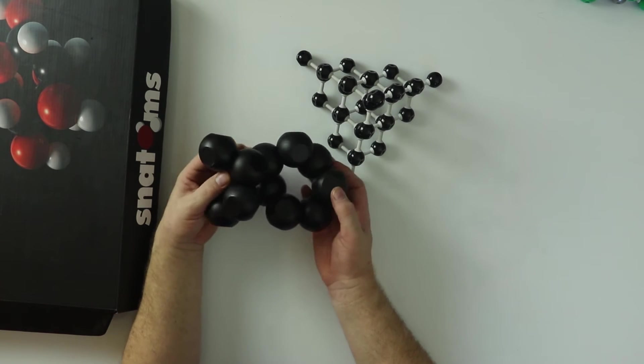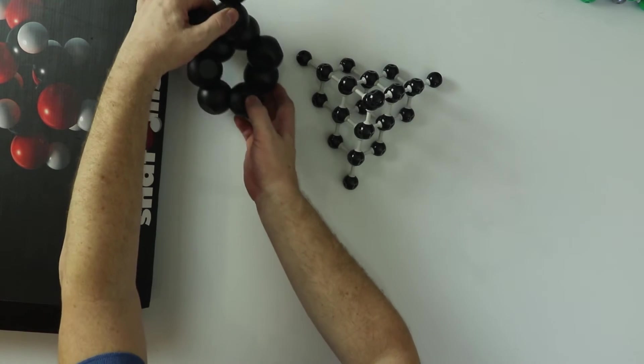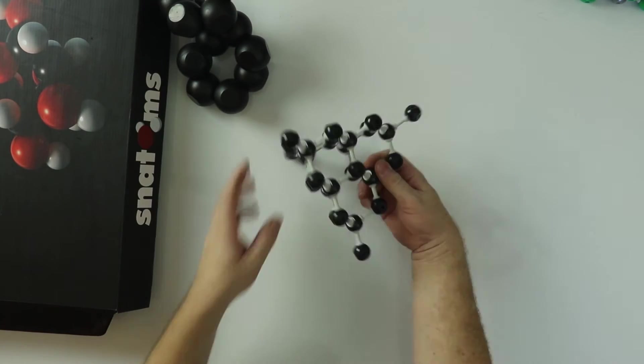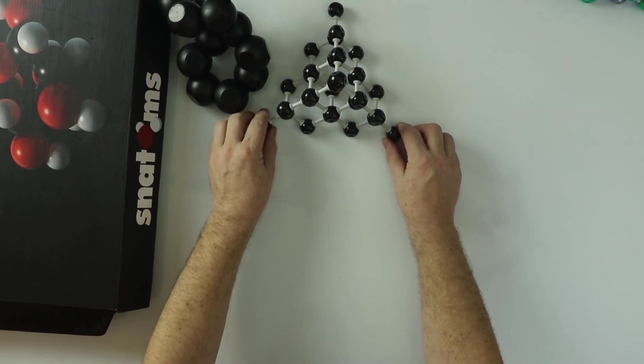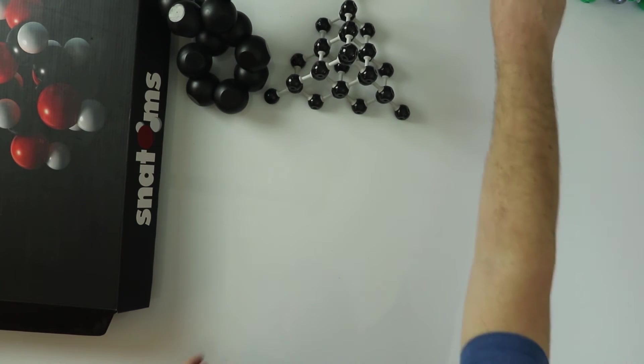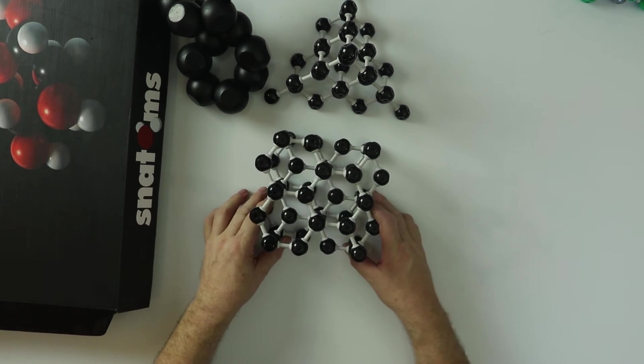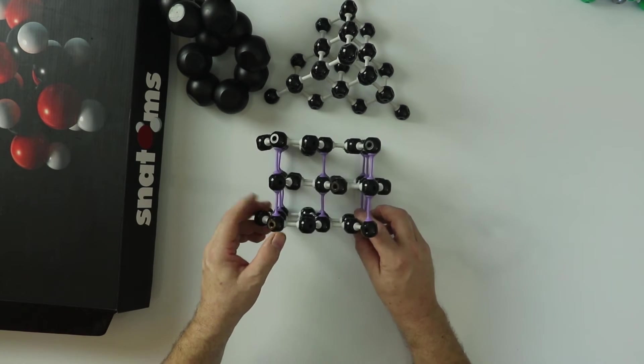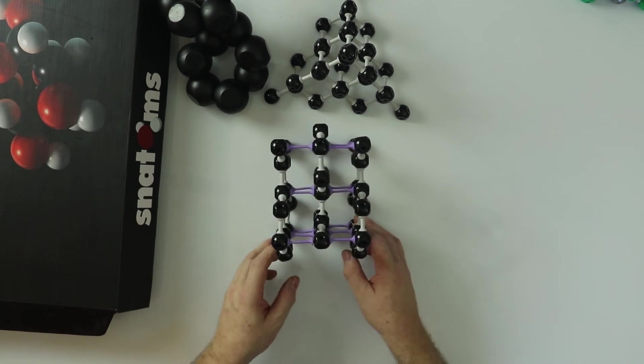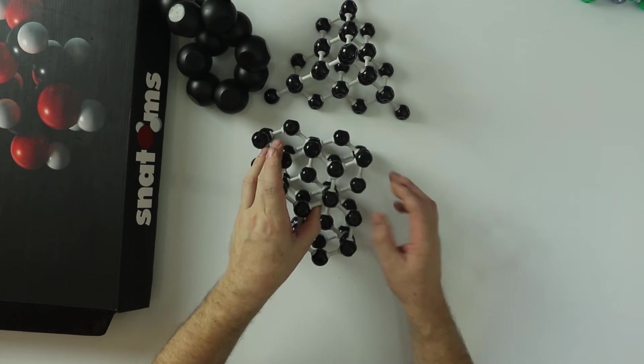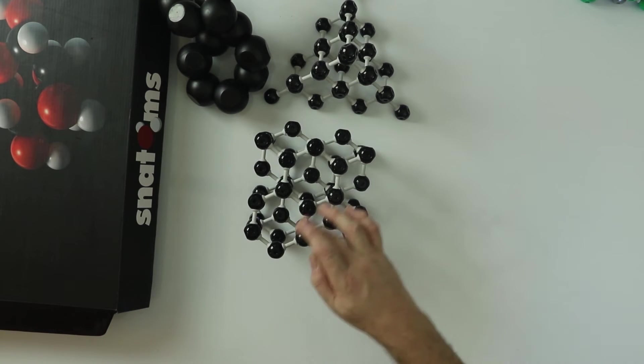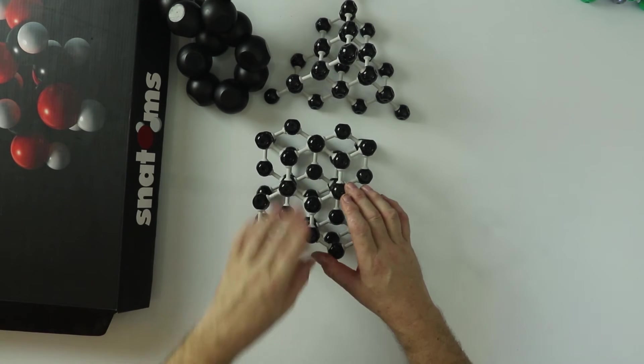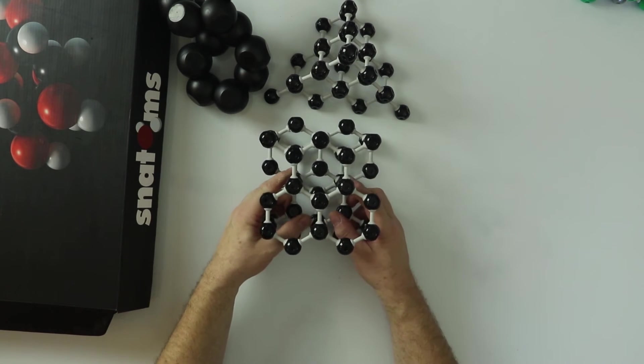Carbon doesn't exist just in this form which is diamond, but we also find it occurs in this form here. This is graphite. Graphite consists of a six-ring of carbon joined to another six-ring of carbon.